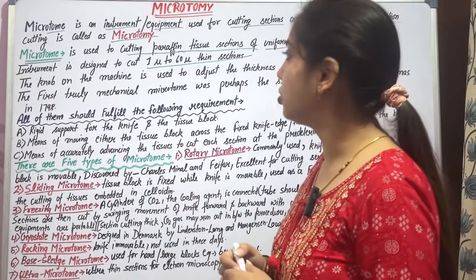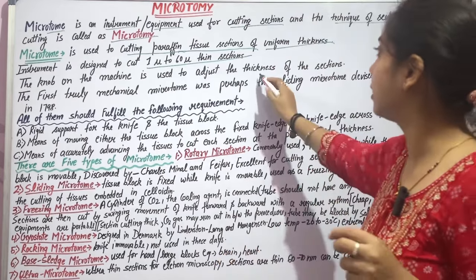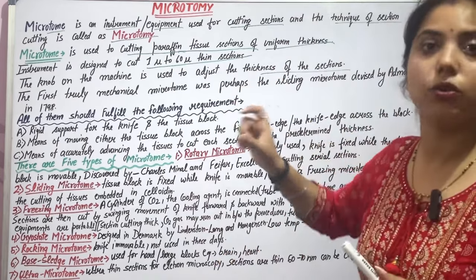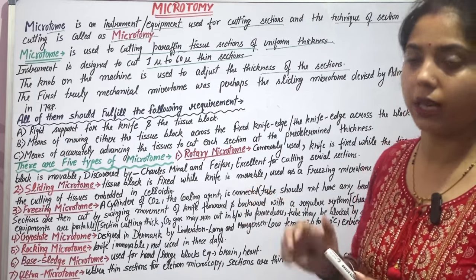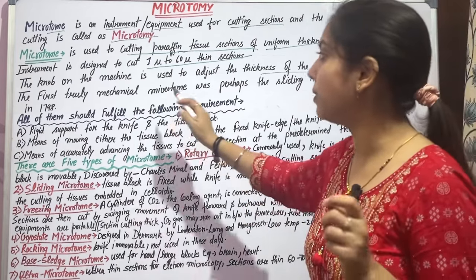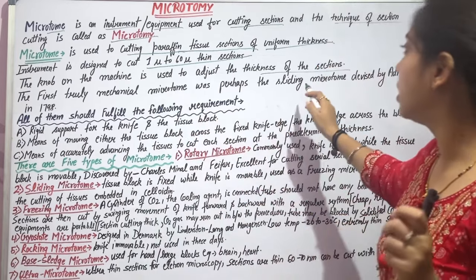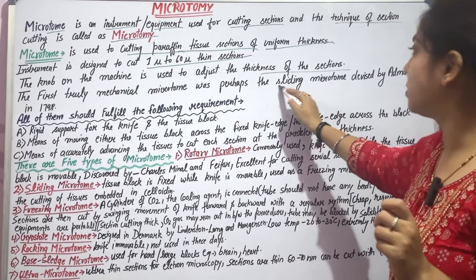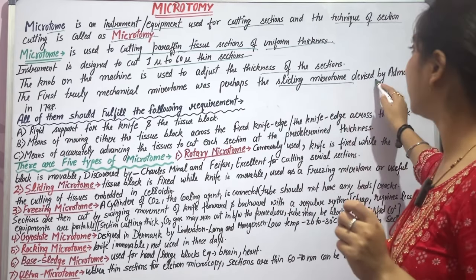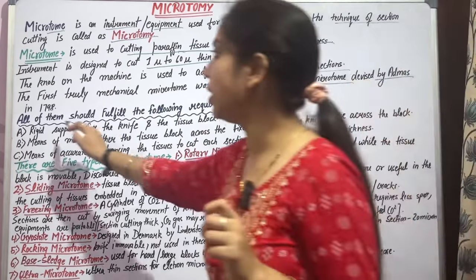The machine is used to adjust the thickness of the sections. Thickness can be adjustable when cutting sections. The first truly mechanical microtome was the sliding microtome, which was made in 1979.